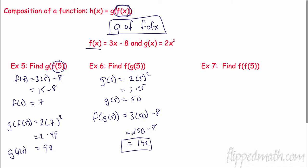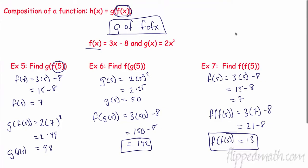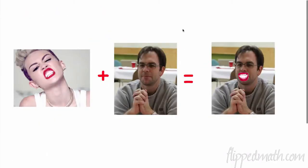Why don't you try example number 7 all on your own? So the first thing we have to plug in is 5 for f of 5. I do the work, I get 7. Now I'm plugging in 7 to my f function — it's a little weird, it's going to be the same exact function. 3 times 7 minus 8, and we get 13.